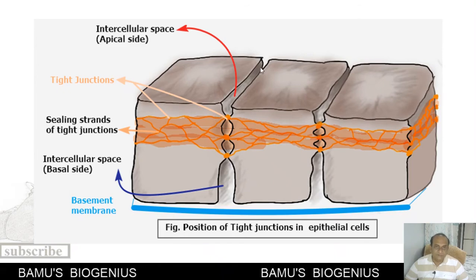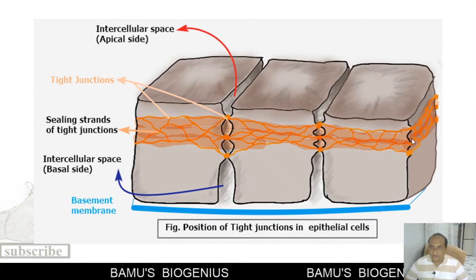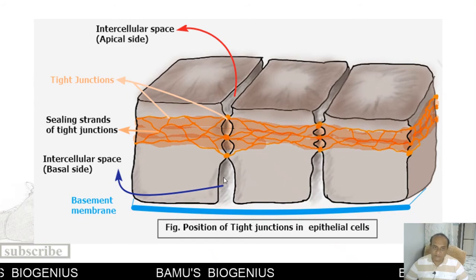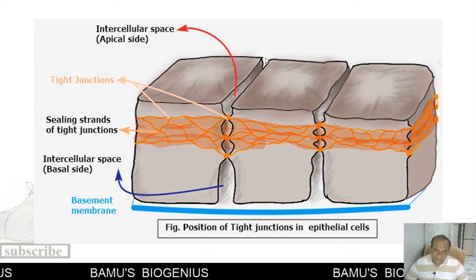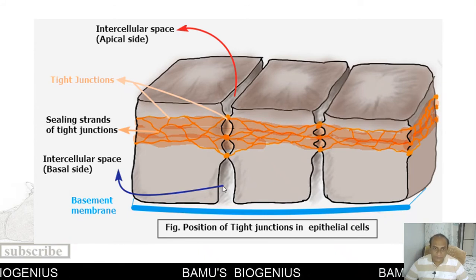You can see here this is the intercellular space on the apical side of the epithelial cells and this is the intercellular space on the basal side of the epithelial cells. These are the sealing strands of tight junctions that encircle each and every epithelial cell. Because of the presence of these tight junctions, the intercellular space is divided into the apical side and the basal side, and whatever material comes in is prevented from passing through these intercellular spaces into the basal side.